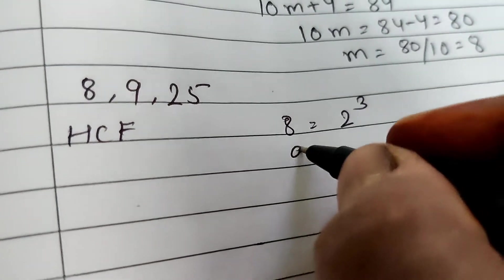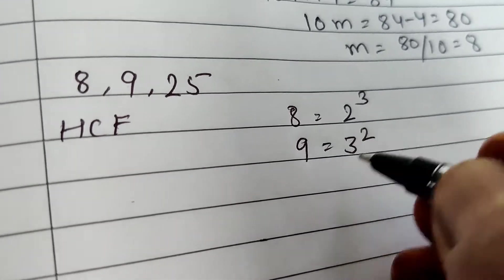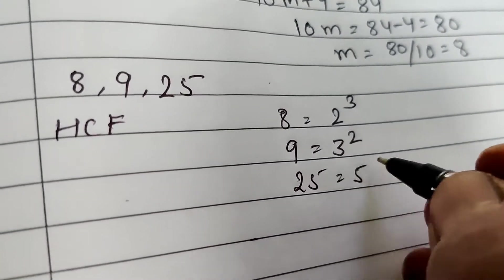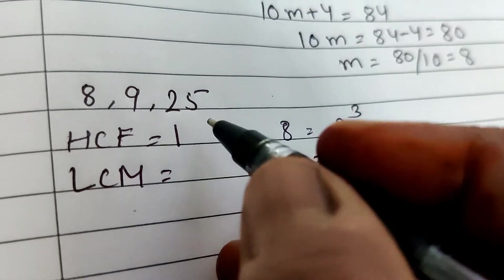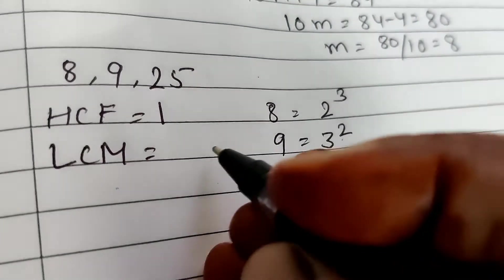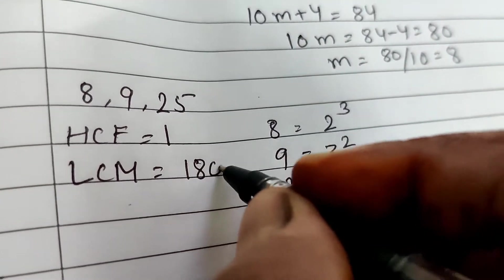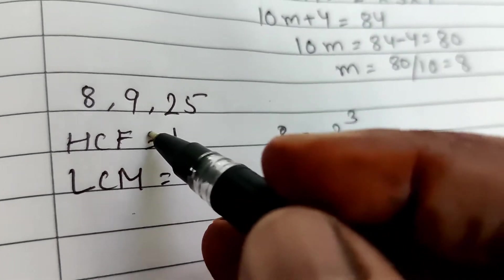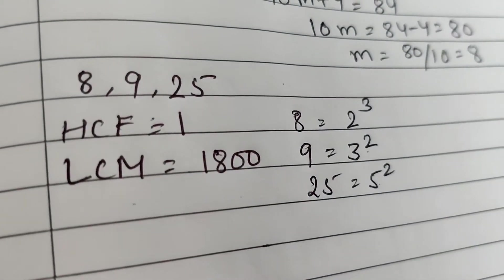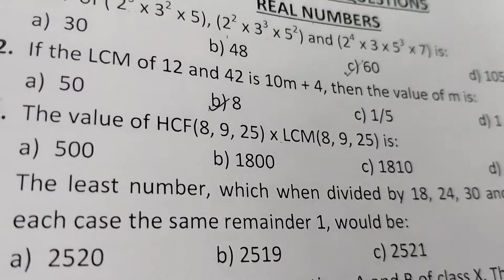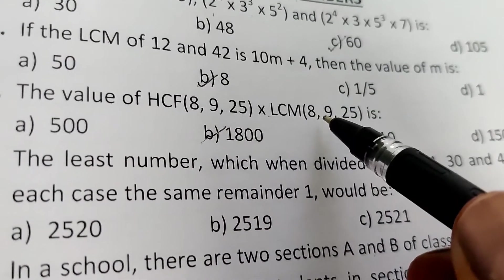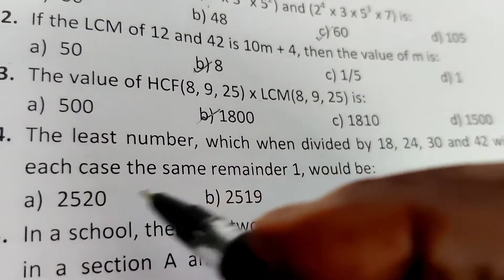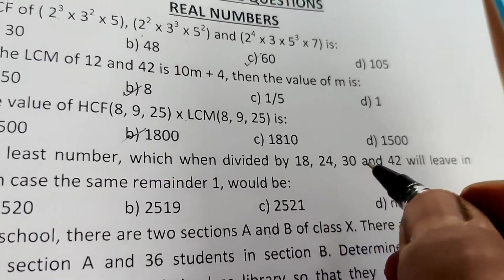9 = 3² and 25 = 5². There is nothing common among these three, so HCF = 1. The LCM is the product of all three: 2³ × 3² × 5² = 1800. So HCF × LCM = 1 × 1800 = 1800.